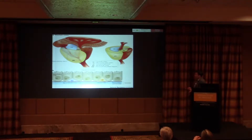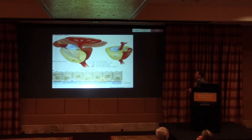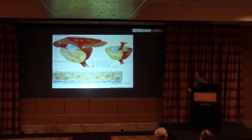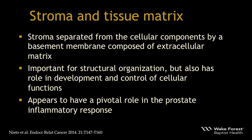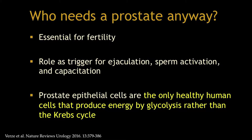The different zones we talk about most are the peripheral zone and the transitional zone. The secretory component has secretory cells at the lumen, with neuroendocrine cells, basal cells, and the basement membrane at the base separating these from the stroma. The basement membrane is composed of extracellular matrix and is important not only for structure but also for development of the gland, controlling cellular functions, and appears to have a pivotal role in the inflammatory response within the prostate.